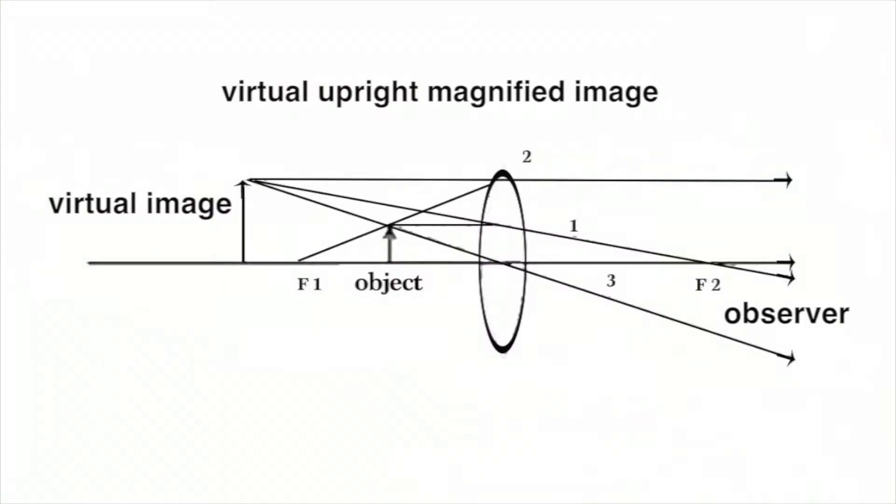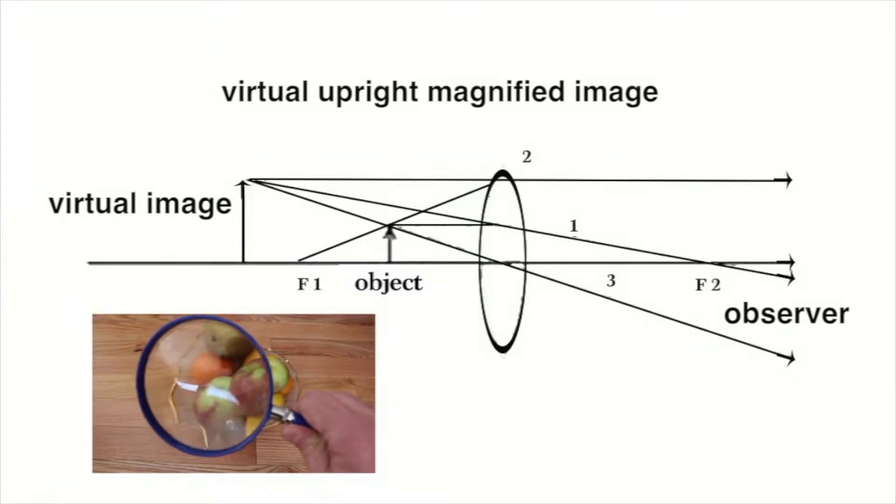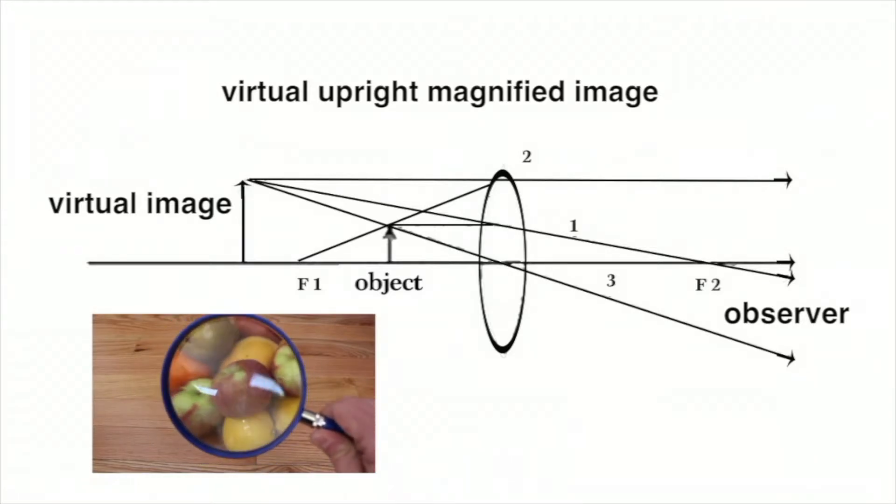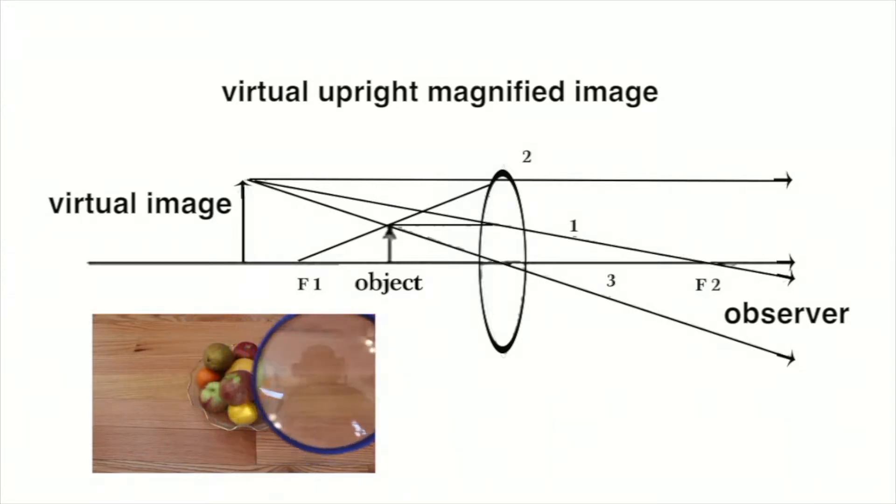A virtual image is produced when the object is closer to the lens than the focal point. The image is magnified and larger than the actual object. The image is upright and not reversed. A virtual image can be seen but not shown on a screen.